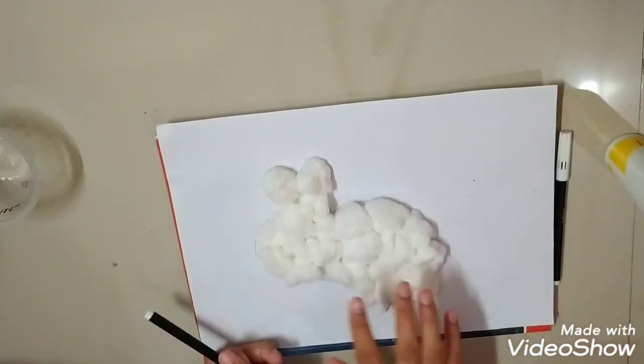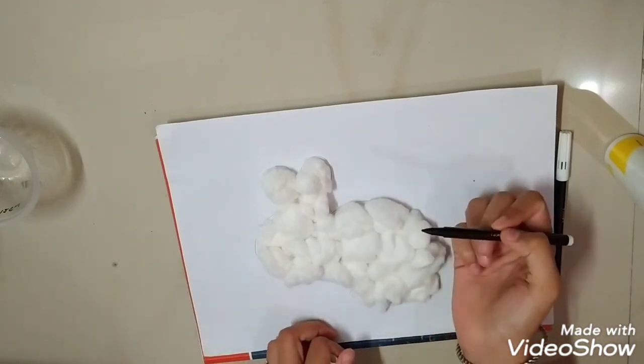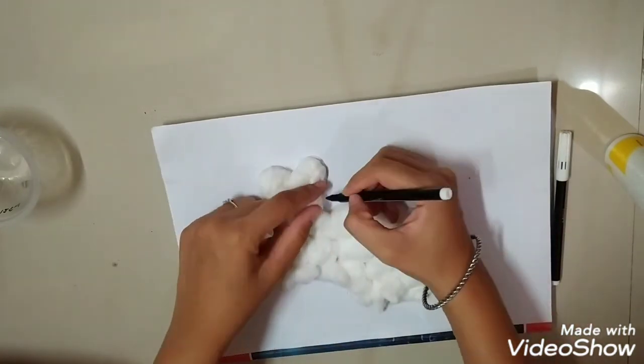Till now, see, I have completed the rabbit. Now I am taking black sketch pen and outlining the rabbit. So see, I have completed the rabbit.